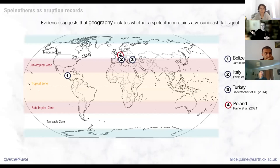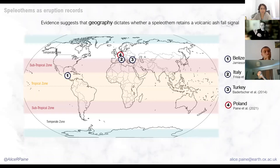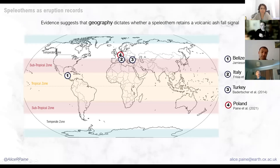Those are the two main ways you could preserve an ash signal in a stalagmite. This diagram, included in our paper published earlier this year, illustrates these processes and how, in an idealised situation, they could help us study ashfall and volcanic eruptions. Existing studies suggest that geography plays a huge role in whether stalagmites can retain these signals. The circles outlined in blue on the map are ones where there have been convincing trace element enrichments linked to volcanic eruptions. A really key example is a study by Bob Jamieson in Belize, where they managed to link several prominent trace element enrichments to volcanic eruptions between approximately 1970 and 1995.